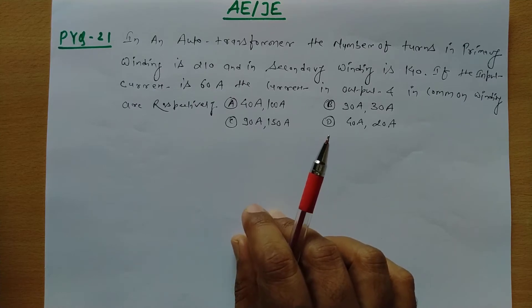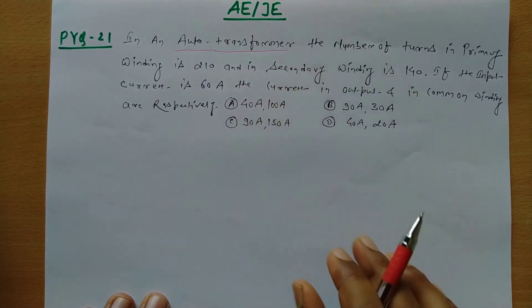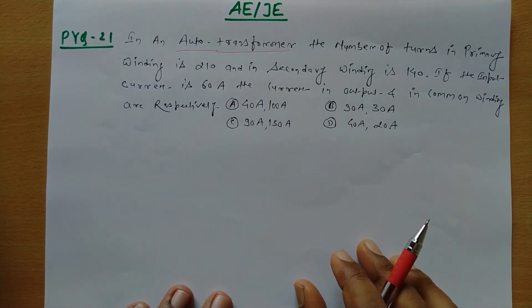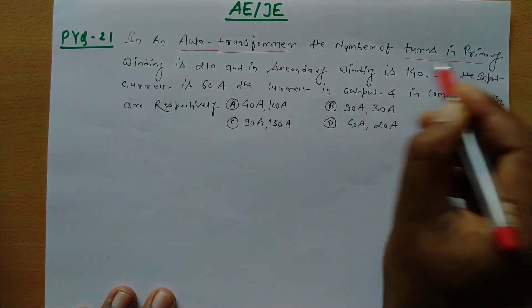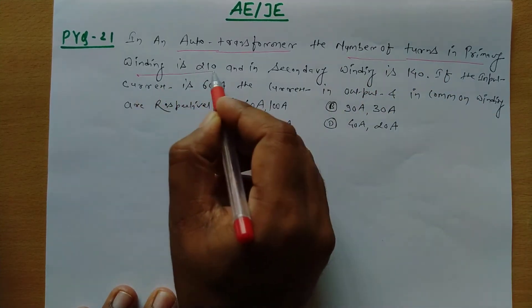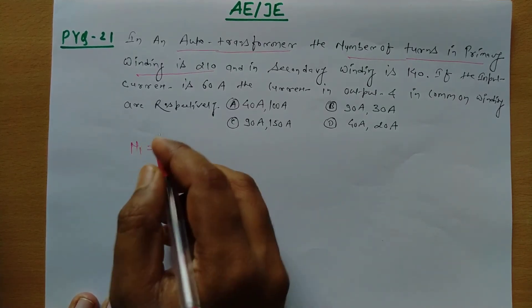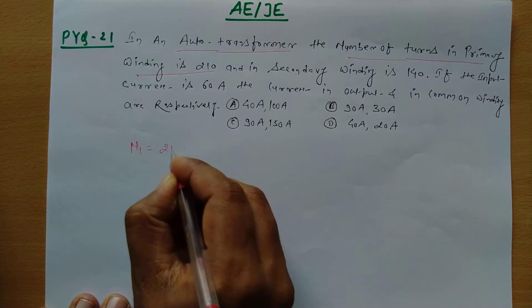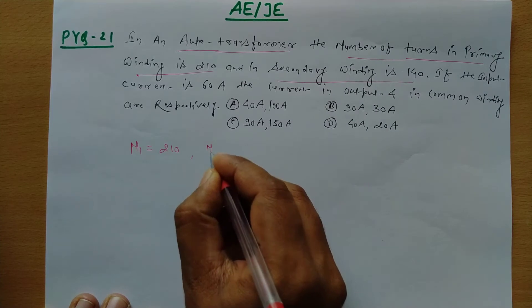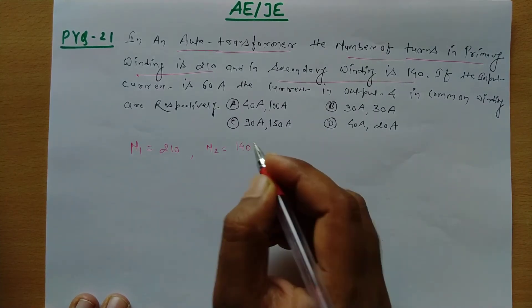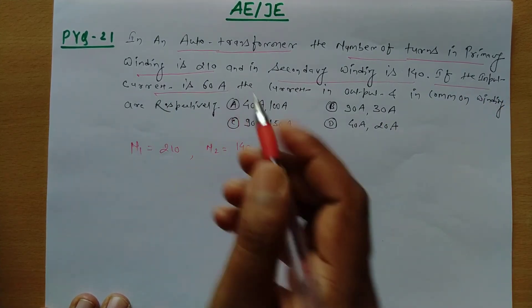Basically this question is on the basis of auto transformer. So here we go to the auto transformer — the number of turns in the primary winding is 210 and secondary is 140. If the input current is 60 ampere.